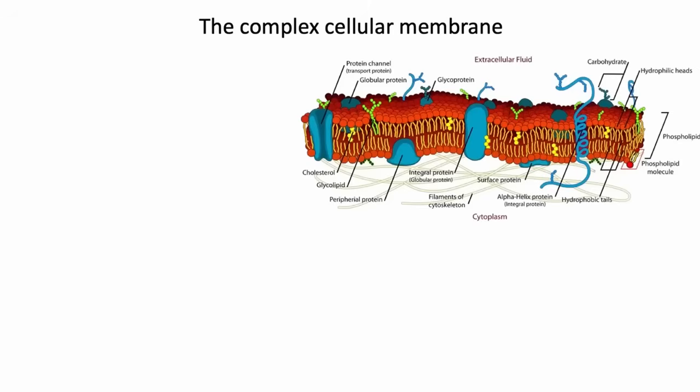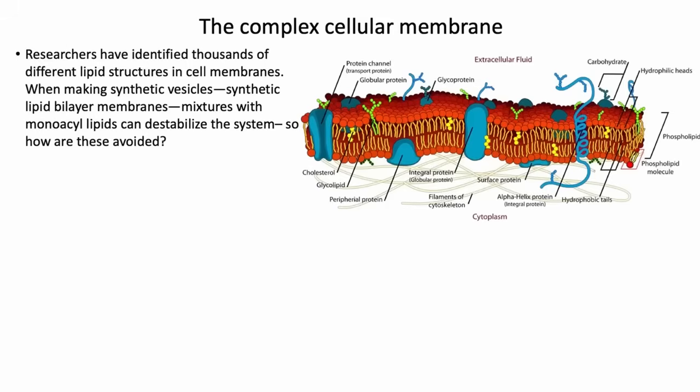So the complex cellular membrane. This is actually what the membrane of a cell looks like when it's made really, really simple in cartoon form. Researchers have identified thousands — actually 40,000 different lipids have now been identified in cell membranes. Not just one. Every protocell experiment uses one type of lipid. Actually, a cell is made up of thousands of different types.